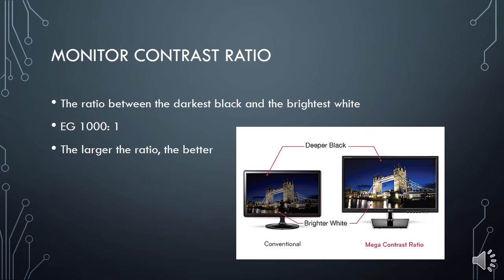The monitor contrast ratio refers to the ratio between the darkest black and the brightest white on the picture. An example would be 1000:1. The larger the ratio, the better, because the clearer your picture will be. In the example shown, a conventional contrast ratio gives a semi-nice picture, while a mega or high contrast ratio gives a much prettier picture.